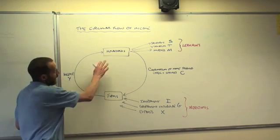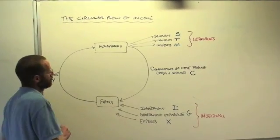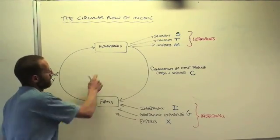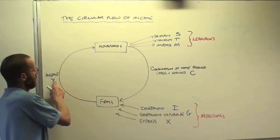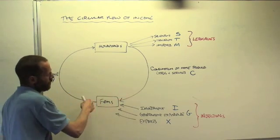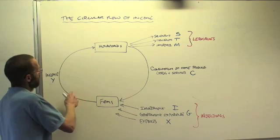Households are the likes of you and me - individuals, groups of people, families, etc. We provide work for firms, and as a result, we get income. The black lines show the way that the money flows. So we gain income.